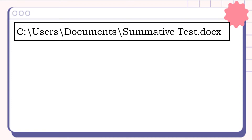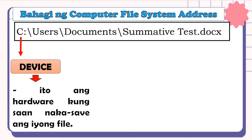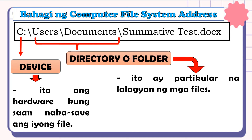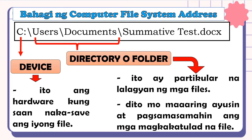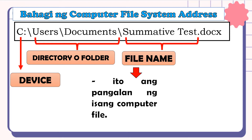Tingnan ang nasa larawan. Ito ang halimbawa ng computer file system address. Narito ang mga bahagi nito. Una, ang device — ang hardware kung saan nakasave ang iyong file. Ito naman ang directory o folder — particular na lalagyan ng mga files. Dito mo maaaring ayusin at pagsamasamahin ang mga magkakatulad na file. Ito naman ang file name — ang pangalan ng isang computer file. At pagkatapos ng period o tuldok, ang tinatawag nating file extension.